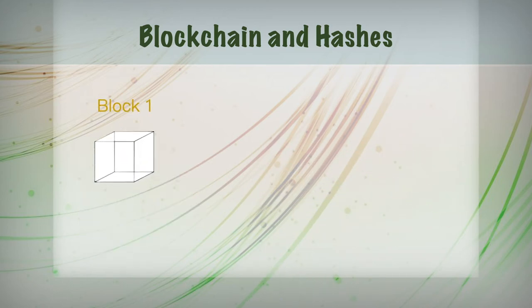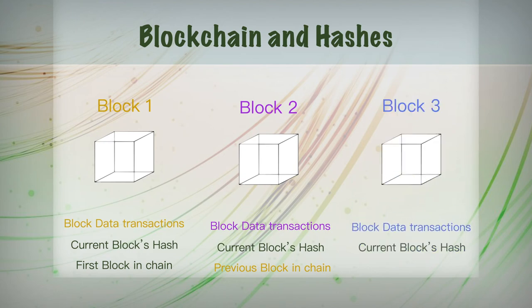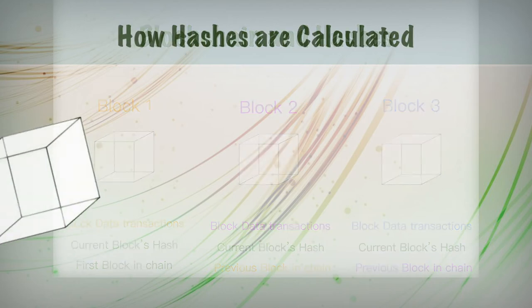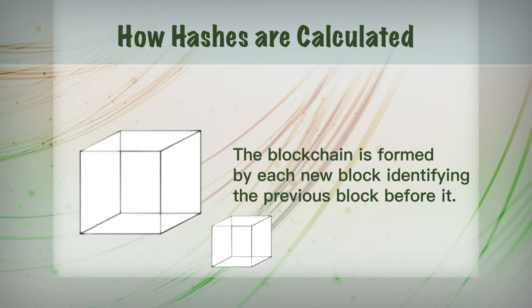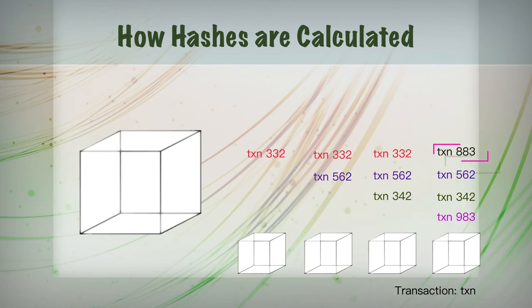Here is how hashes are calculated within the blockchain. The first hash is calculated for the first block — the genesis — using transactions from the first block of transactions on the network. Initial transactions generate a block hash for the genesis block. For each subsequent block generated, the previous block's hash, as well as its own transactions as inputs, generate a new block hash. The blockchain is formed by each new block identifying the previous block before it. This system means if a previous transaction is changed, so does the hash of the block to which it belongs, as well as the following blocks.